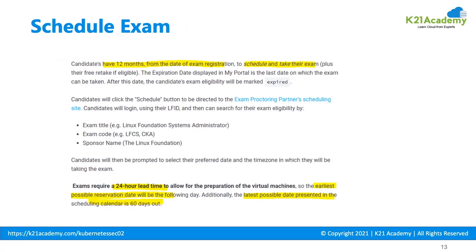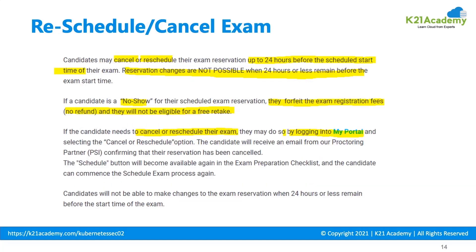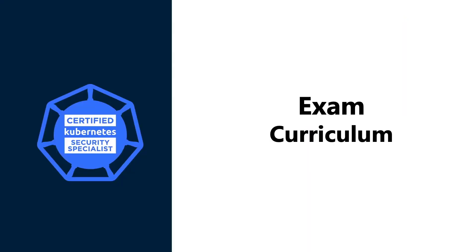You can schedule the exam after registration of your exam voucher. You will get 12 months from registration to choose the date. You have to choose the right code for the exam, and under the My Portal section you can check the expiry or last day on which the exam can be taken. In case you want to reschedule or cancel your exam, you have to do so before 24 hours of the scheduled start time, or the exam fee will be forfeited.